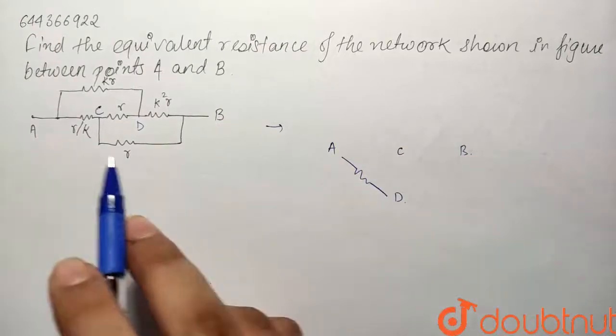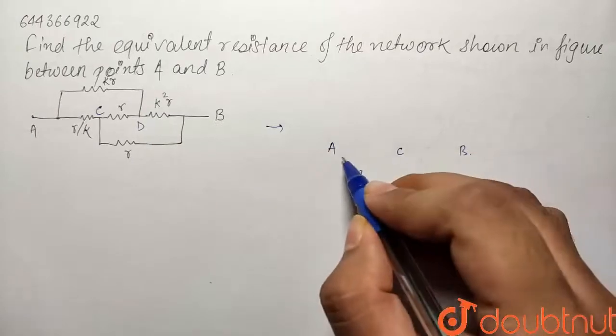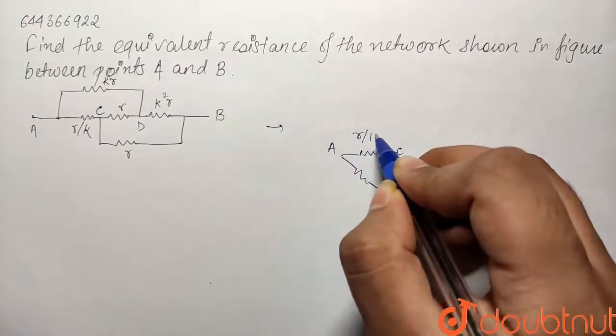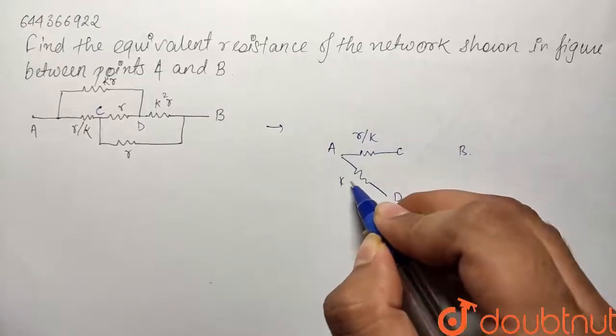The next resistance is between A and C and that is R by K. So this is our second resistance and the value is R by K. Similarly, this was KR.